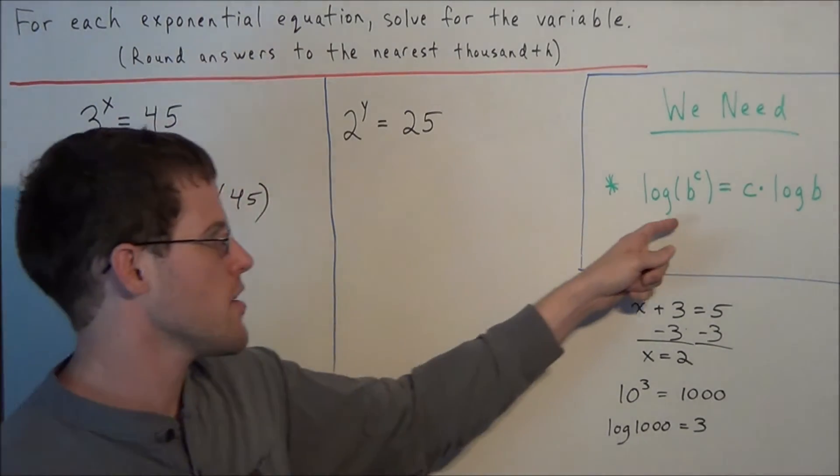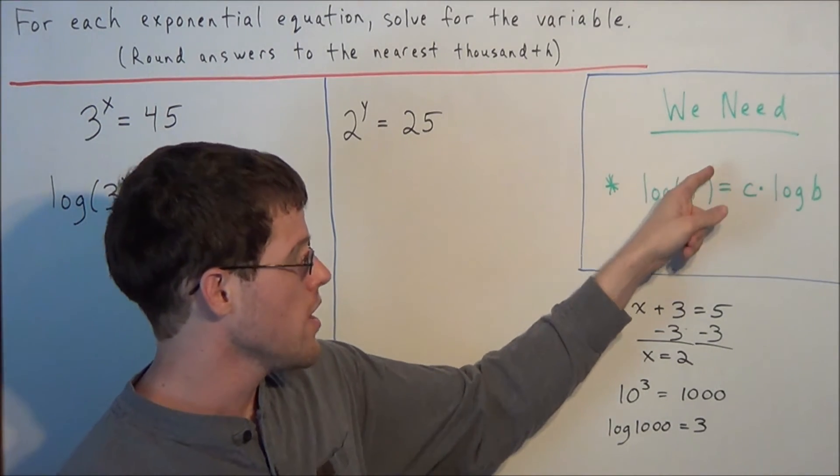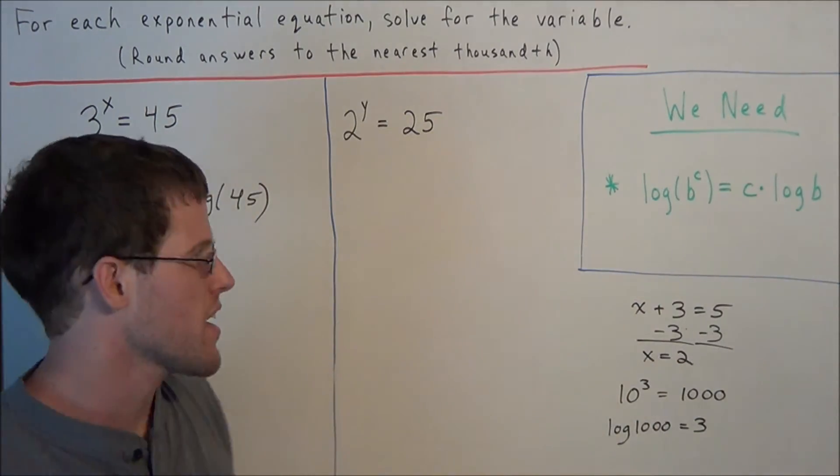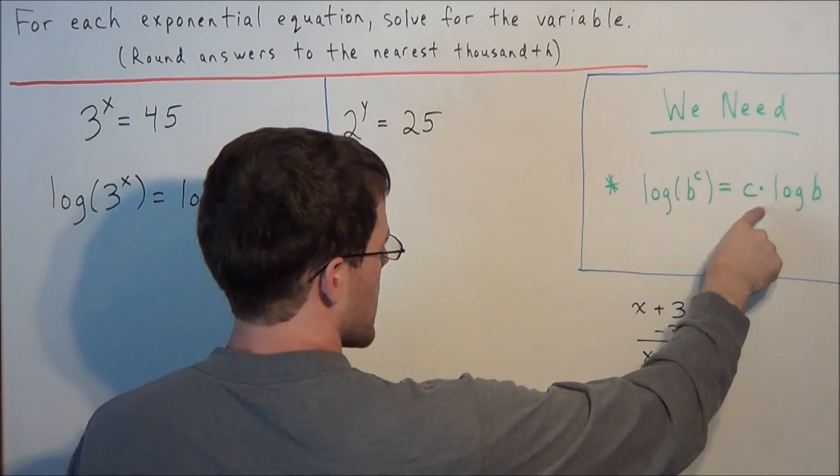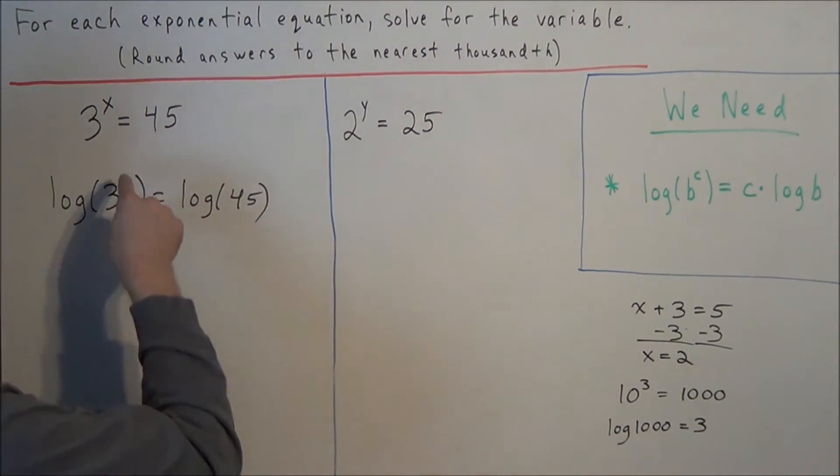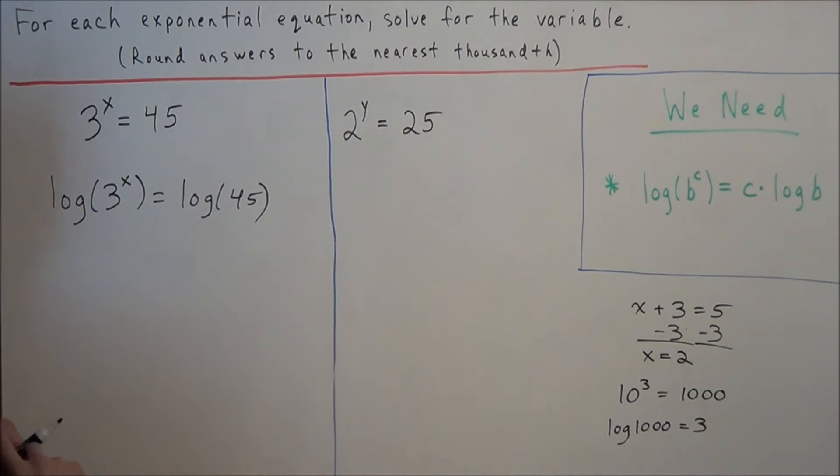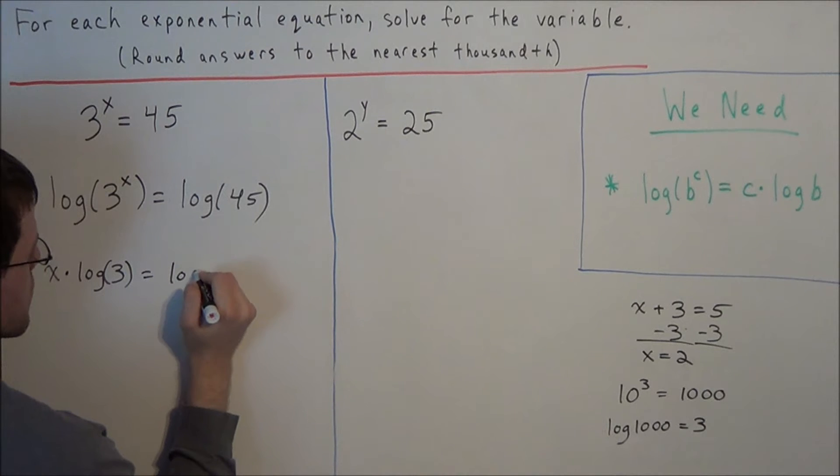But now we can use this property of logarithms. When we take the log of some term with an exponent, that exponent could pop outside of the log and be attached by multiplication. So notice how it's b to the c power and in the next line it's c times log b. So what that allows us to do is this x that's in the exponent could pop outside of the logarithm in the next line and we can attach it by multiplication. So for the next line we have x times log of 3 is equal to log of 45.